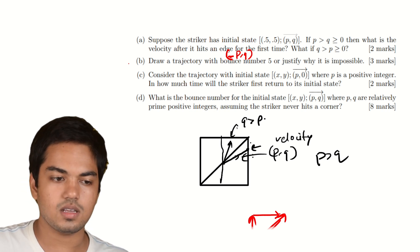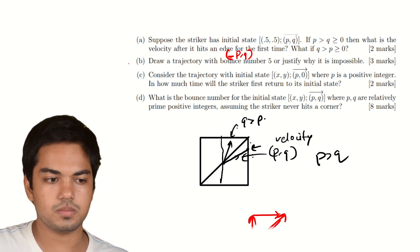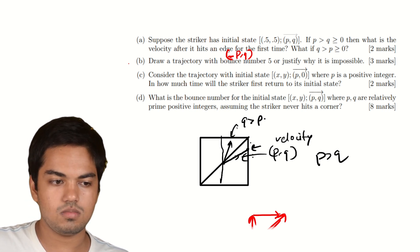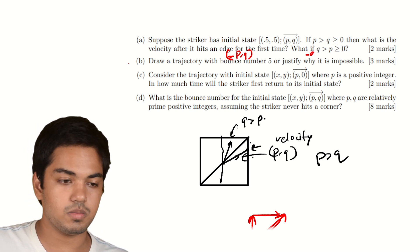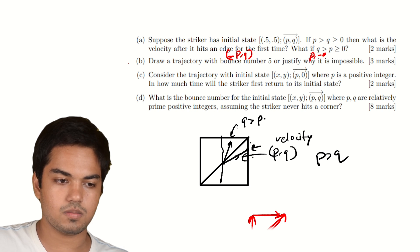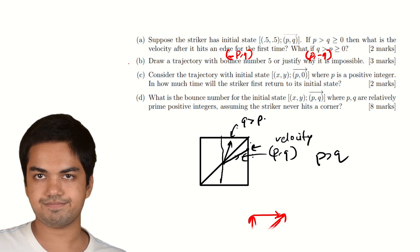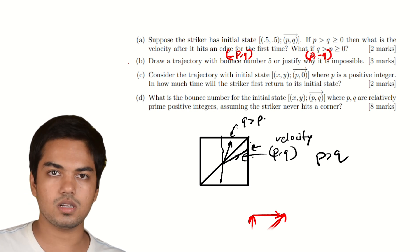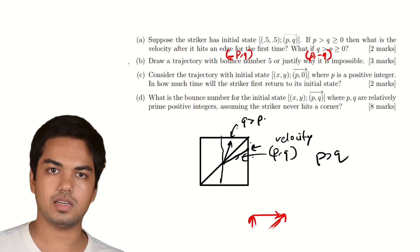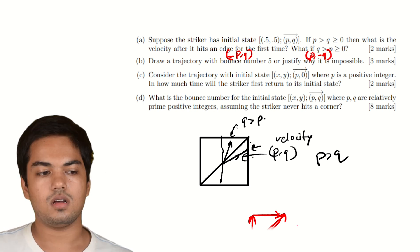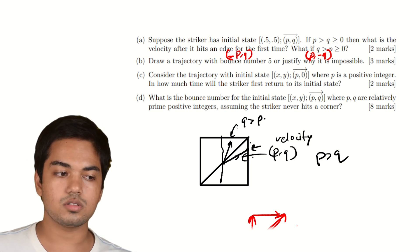This has already proven useful: the velocity is (-p, q) if p > q, and by symmetry (p, -q) if q > p. The magnitude doesn't change, only the sign flips. The next question: draw a trajectory with bounce number 5, or justify why it's impossible.